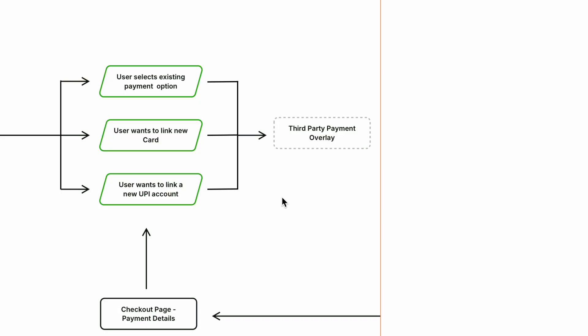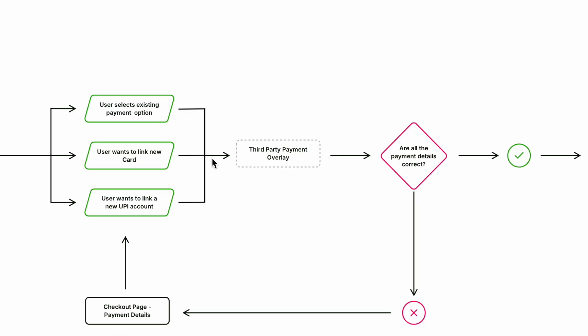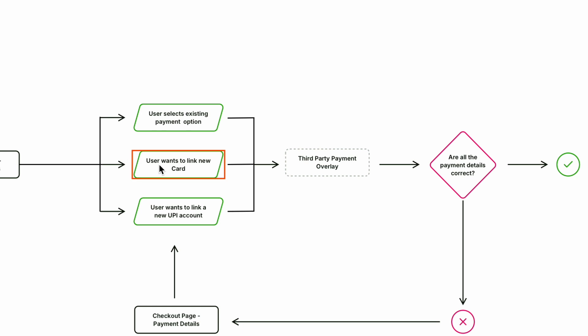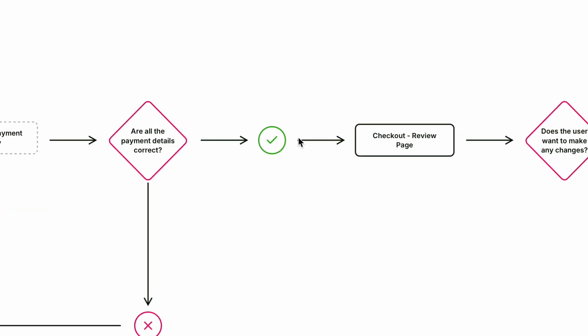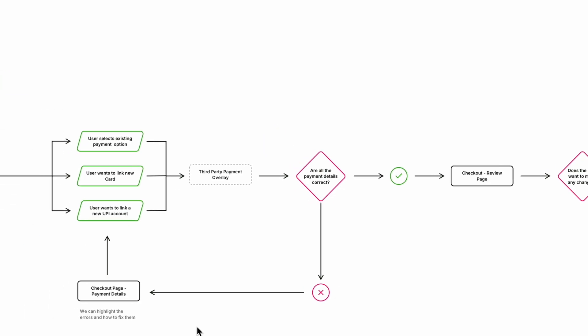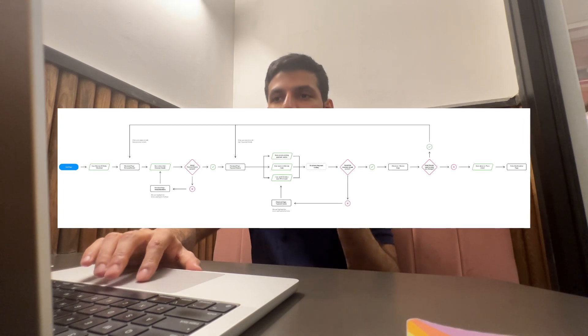Zooming out to show the entire flow, it follows the same convention throughout — users arrive at a page, are asked to perform certain actions, and then there are outcomes: if successful, they're taken down one path; if not, they're taken down another. The point of this demonstration was to show how a user flow is laid out and how these shapes are used. With a bird's eye view, you can see the entire user experience for the checkout flow — that is how you create a user flow from scratch.